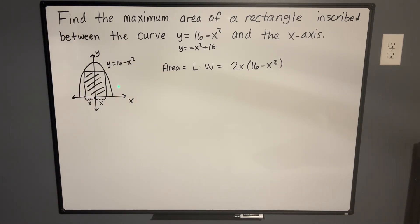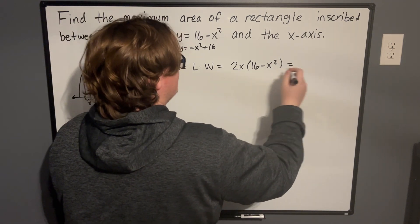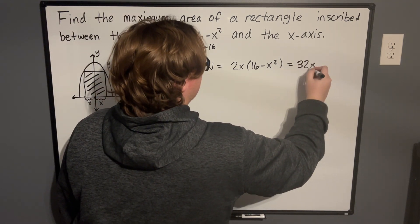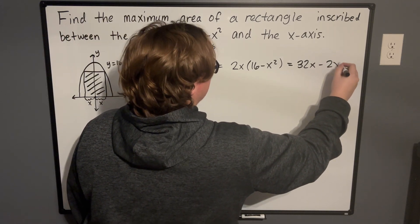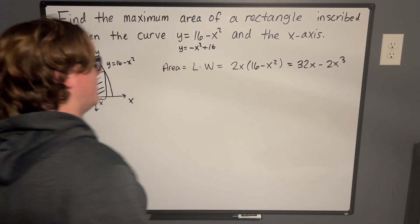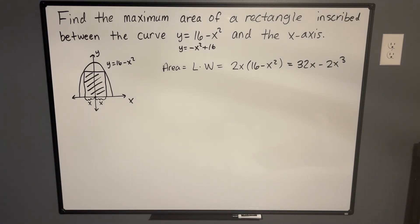So now we have a setup for the area. Let's go ahead and distribute this out. So we're going to get 2x times 16 is going to be 32x, and then 2x times minus x squared is going to be minus 2x cubed. So this is a function for our area in terms of x, in terms of how far we go from the origin to the right here.